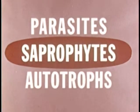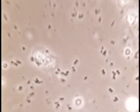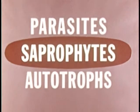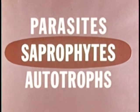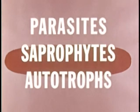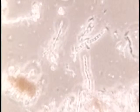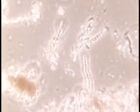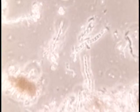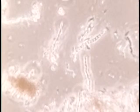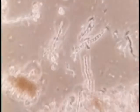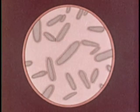Saprophytes live upon dead plants or animals or their products. Saprophytic bacteria produce enzymes that cause the chemical breakdown we call decay. There are more kinds of saprophytic bacteria than of any other type. Autotrophs get their energy from minerals or other inorganic materials. The autotrophic bacteria seen here live upon a form of iron. Through oxidation, they change one form of iron into another and use the energy that is released. Unlike the large majority of plants, most bacteria have no chlorophyll with which to manufacture food.